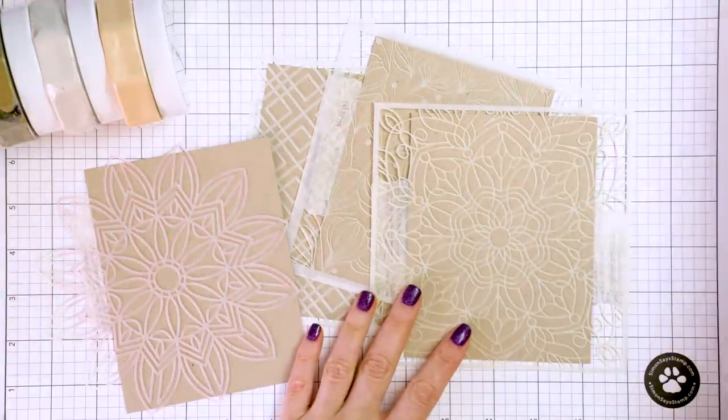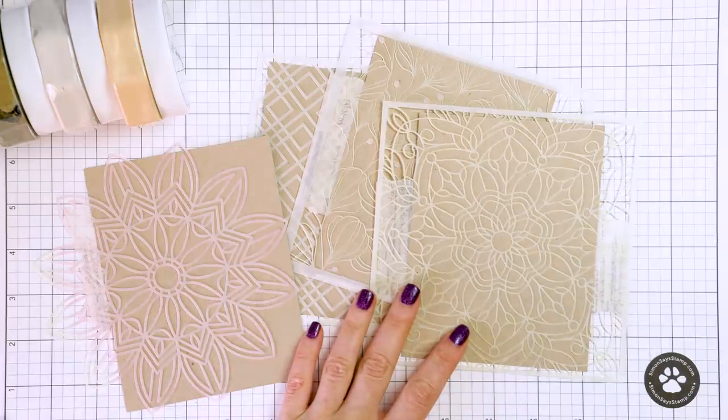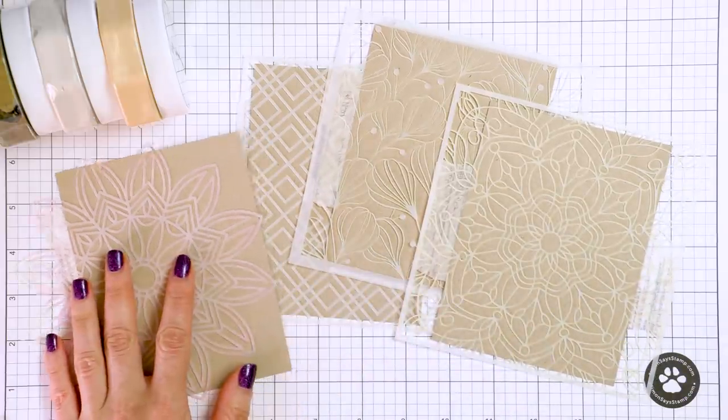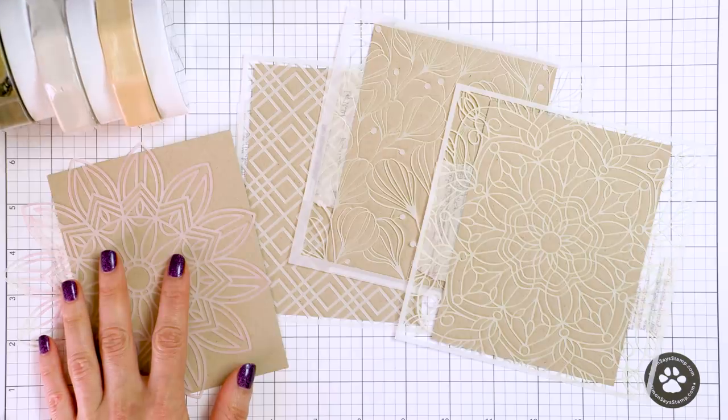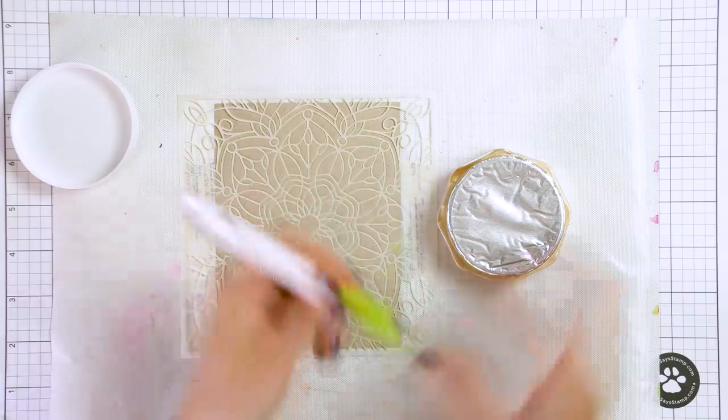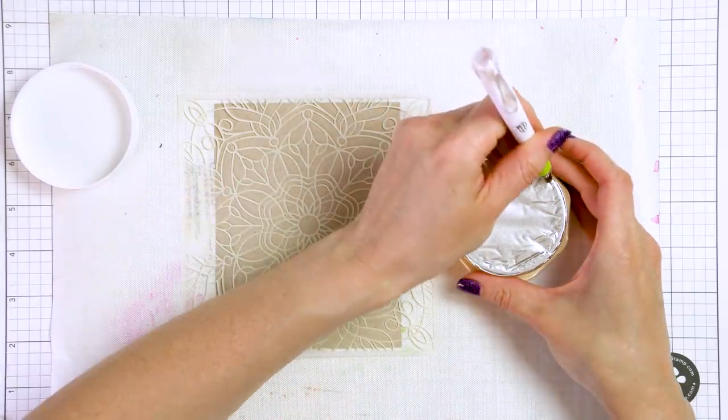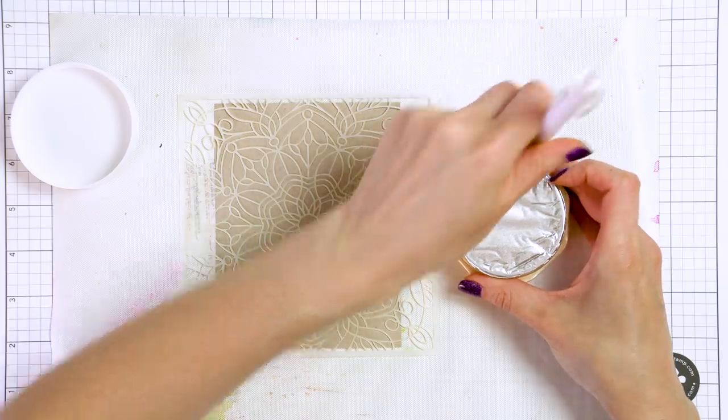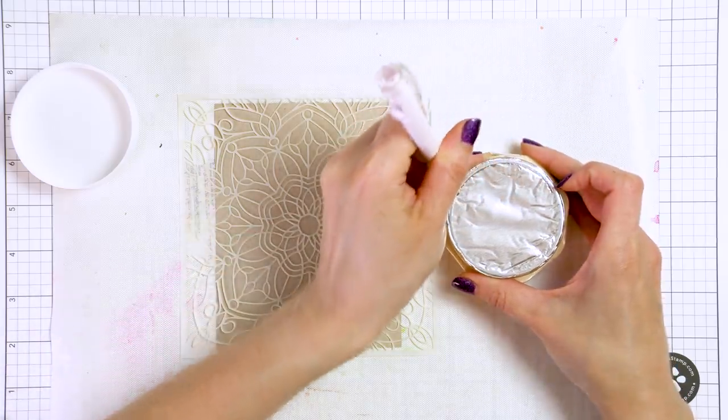I've already prepped several panels. I cut my Neenah Desert Storm card stock to 4 and a quarter by 5 and a half inches and taped several stencils from Simon Says stamp onto my panels. I used washi tape to temporarily tape them in place. I've placed the Tonic Easy Clean mat on my work surface to protect it while I apply these mousses.